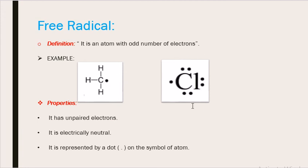The other example is Chlorine Free Radical. We can see there are seven electrons in the valence shell, so six are paired while the one odd electron there makes it a free radical. The properties of free radical are: it has unpaired electrons, it is electrically neutral, it does not carry any charge, and it can be represented by a dot on the symbol of an atom.